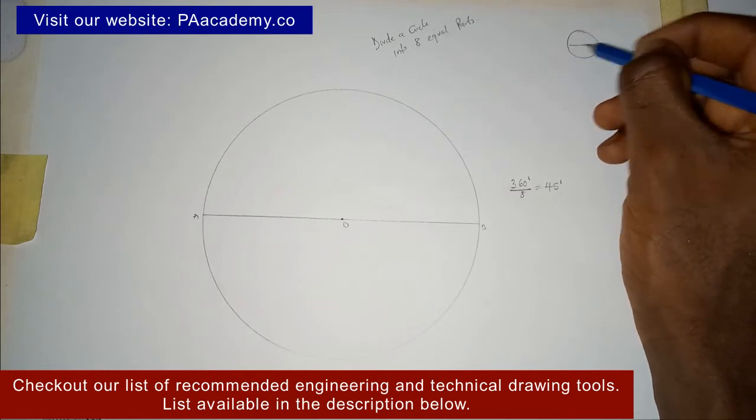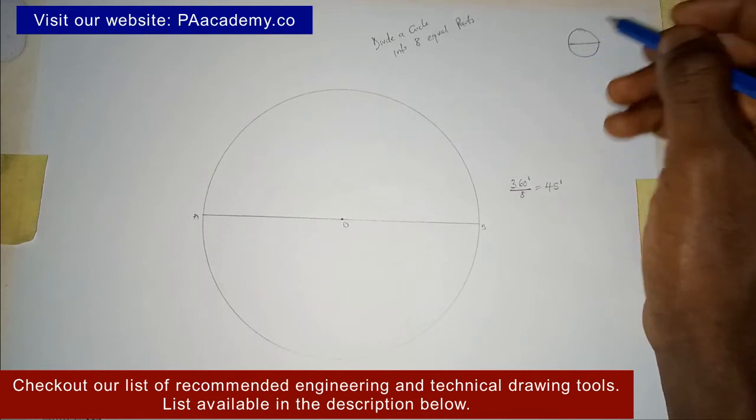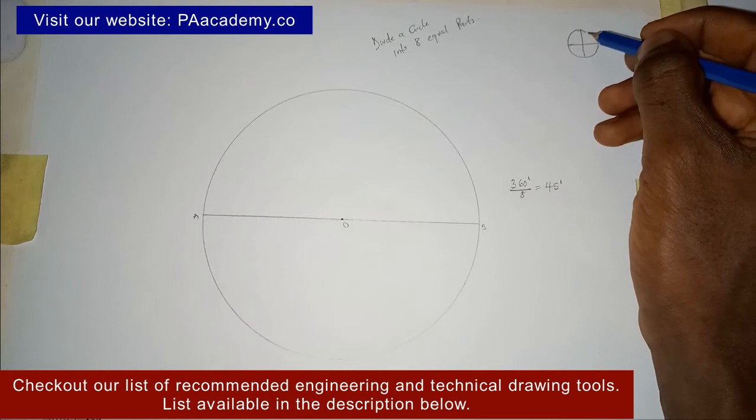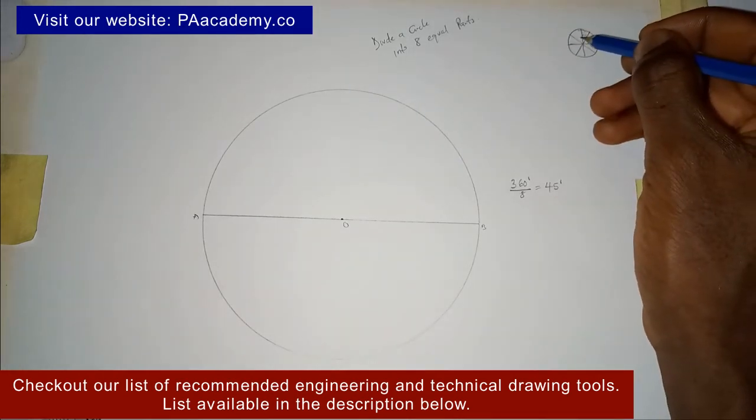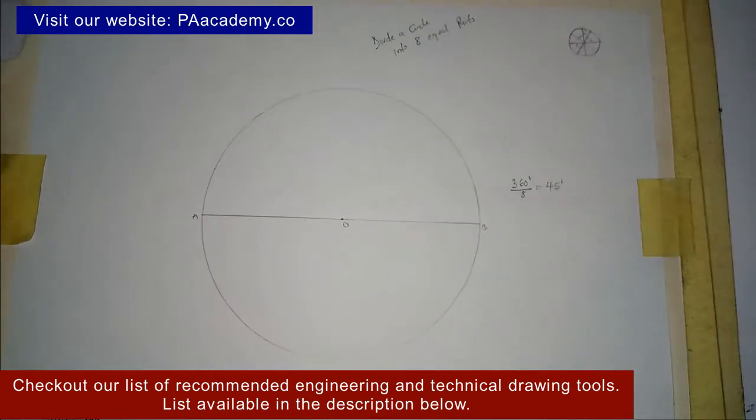If you have a circle and you divide it into eight equal parts, each of these angles will be at 45 degrees.